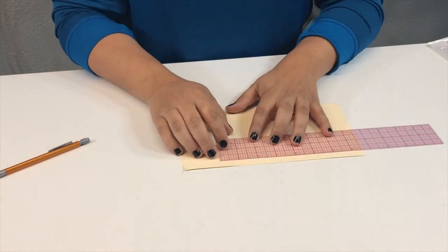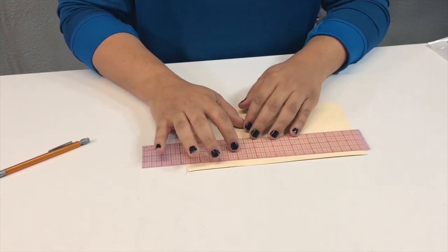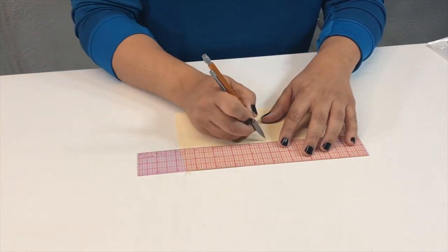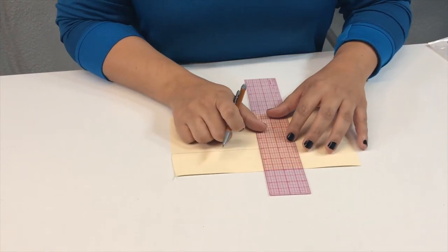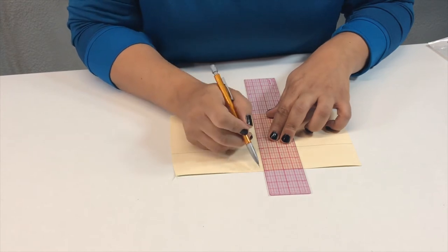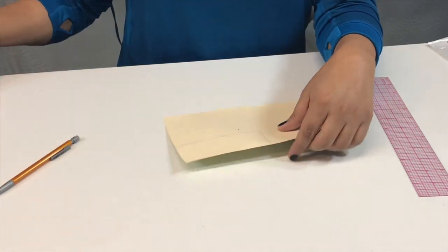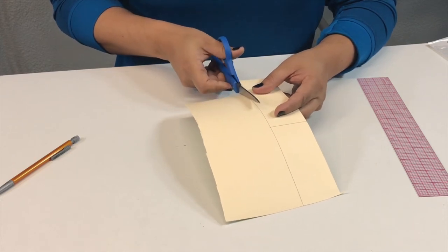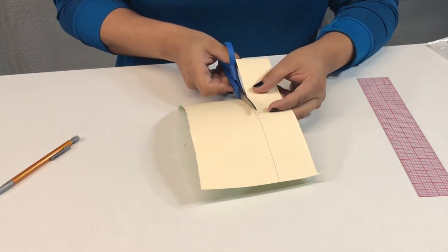Then decide how long you want your ruler to be. I normally like around five inches or less, because longer is harder to control. I'm going to use my ruler to measure five inches along this line, trying to keep it straight. Now we're going to cut this portion. Try to be as precise as you can.